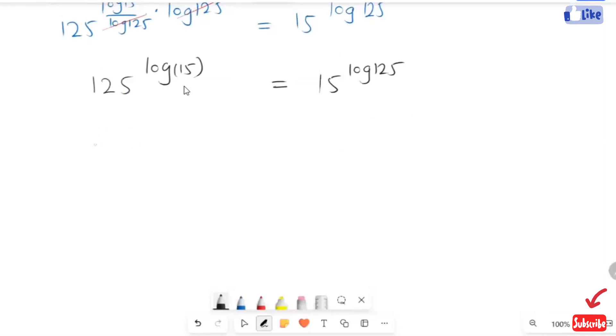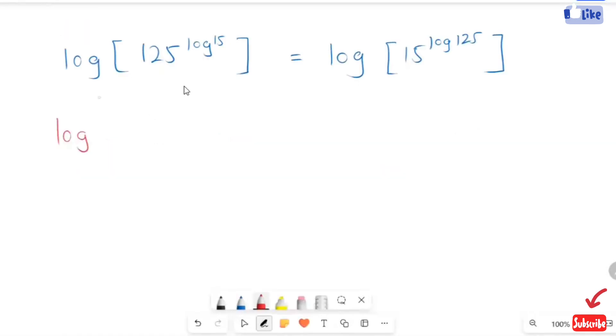Let's take log of both sides. This can be written as log 125 raised to x equals log 15, which expands to log of 125 times log of 15.